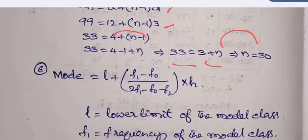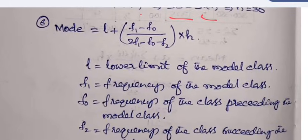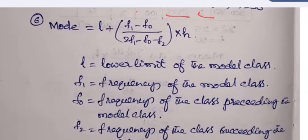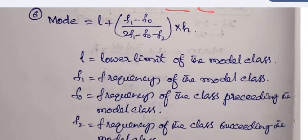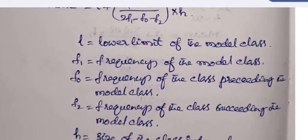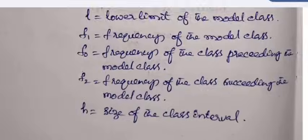So 3 plus n is equal to 33, then n is 30. So that means there are 30 terms. Formula for mode is given: l plus f₁ minus f₀ by 2f₁ minus f₀ minus f₂ times h. Here the terms are explained.